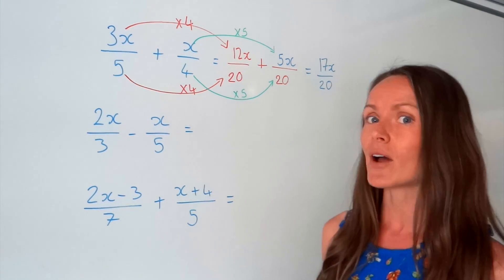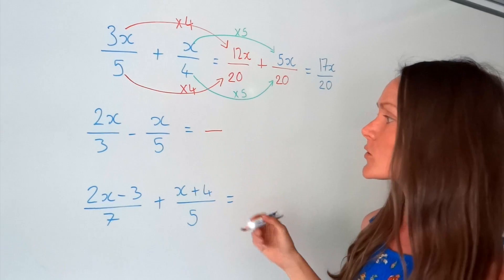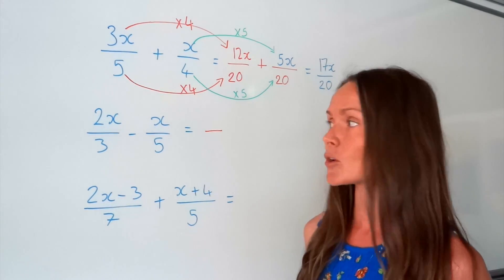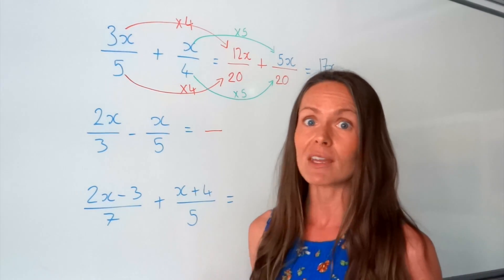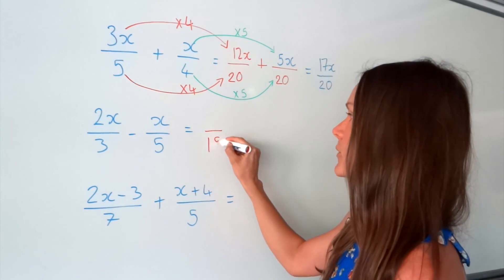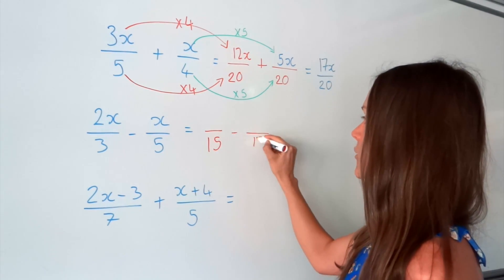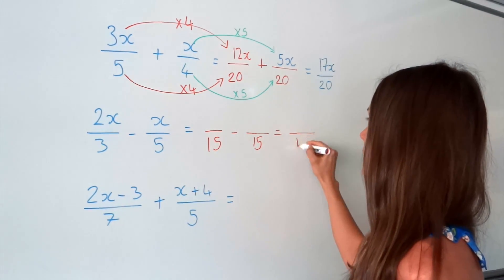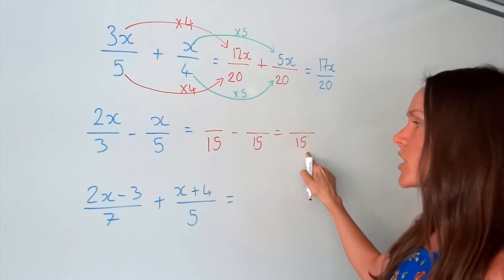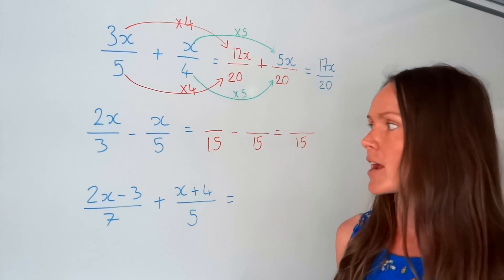On to the next one. Again, you need to find a common denominator. So the lowest common multiple of 3 and 5 — the smallest number that both 3 and 5 fit exactly into — is 15. So remember, it's the same throughout, even at the end, because the denominator doesn't change.